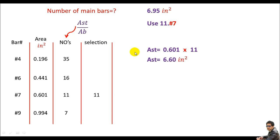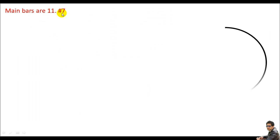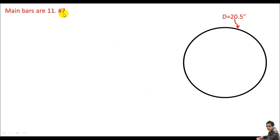We can also use the table from the previous two lectures. For No.7 bars with 11 bars, the area is 6.60 square inches. This is how we represent the design: diameter = 24.5 inches, with 11 dots around the section representing the 11 main bars.